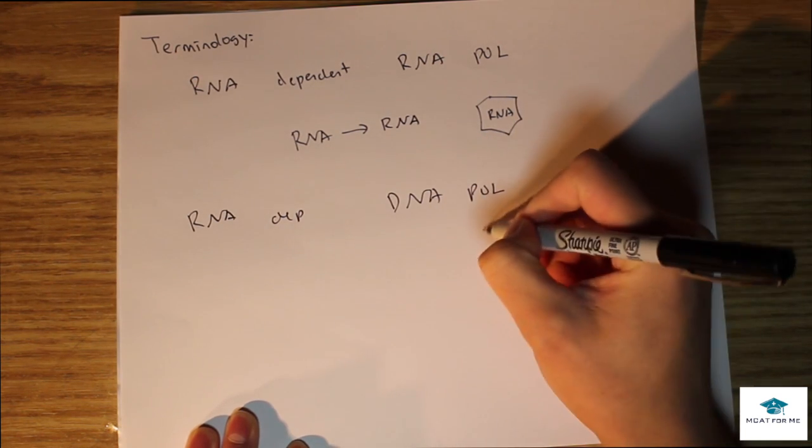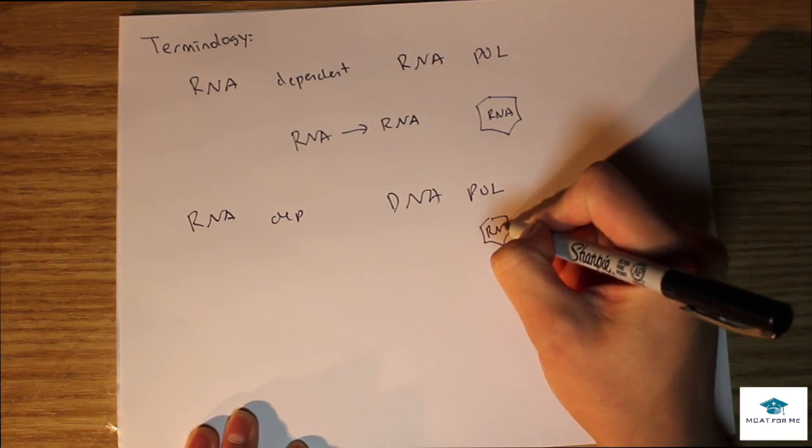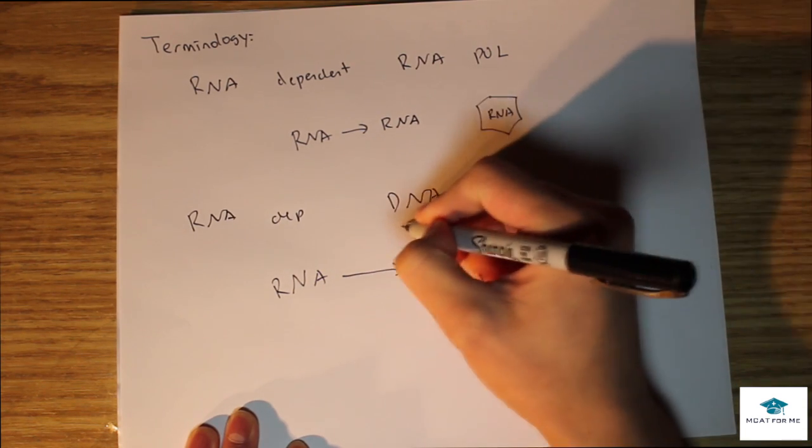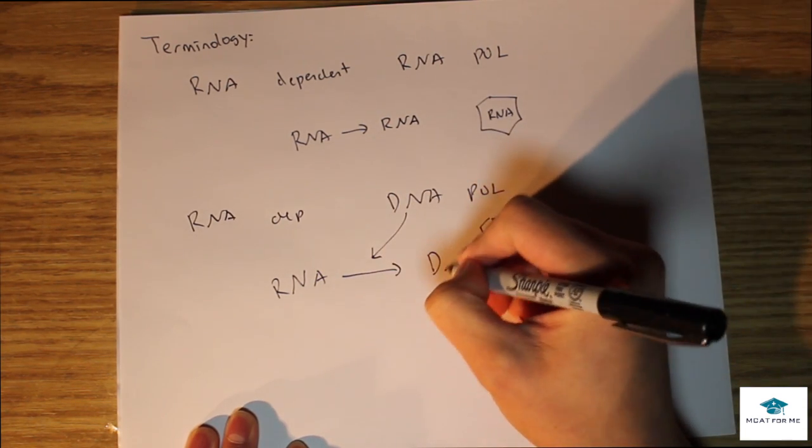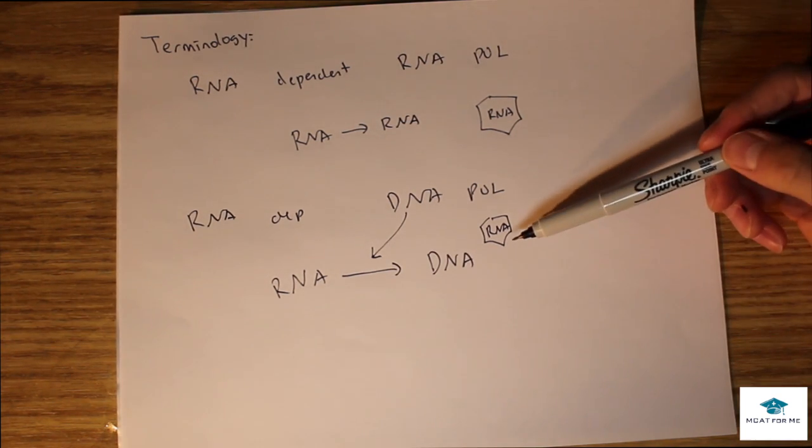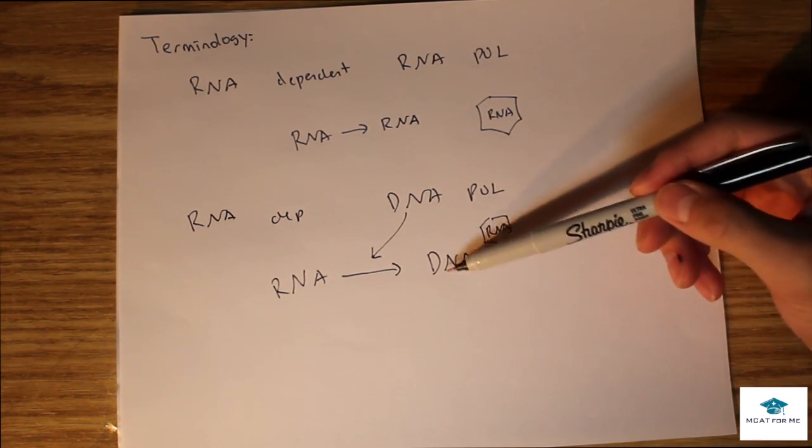Now let's look at something different. If we had the RNA dependent DNA polymerase, what would that look like? Well that means the same virus is still going to have RNA, but now it's going to convert RNA and the DNA polymerase right here is going to convert it to DNA.